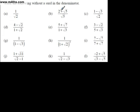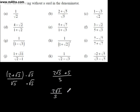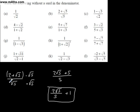Let's look at a slightly more involved scenario: 2 plus root 5, all over root 5. We've only got a root 5 in the denominator, so multiply top and bottom by root 5. Expanding: we get 2 root 5 plus 5, all over root 5 times root 5, which is 5. We could write this as two-fifths root 5 plus 1. It's all about rationalising that denominator.